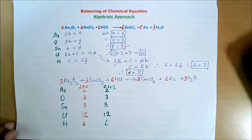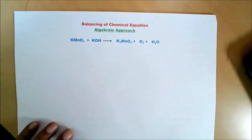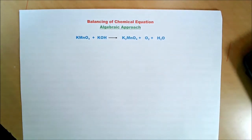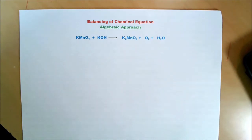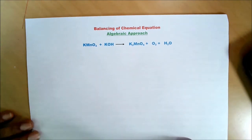Now let us take another example. The reaction is: potassium permanganate reacts with potassium hydroxide to form potassium manganate — oxygen is liberated and water is formed. We shall adopt the same approach to balance this equation.